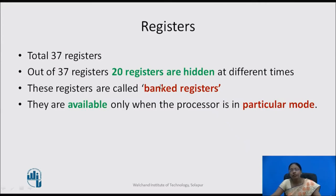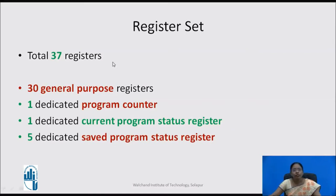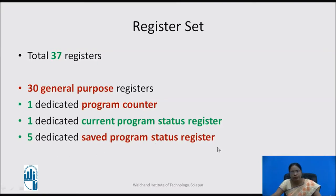The hidden registers, called banked registers, number 20, and they are available only when the processor is in a particular mode. The active registers are available in user mode. The total of 37 registers consists of: 30 general purpose registers (across all different modes), 1 dedicated program counter, 1 dedicated CPSR (current program status register), and 5 dedicated SPSR (saved program status registers).